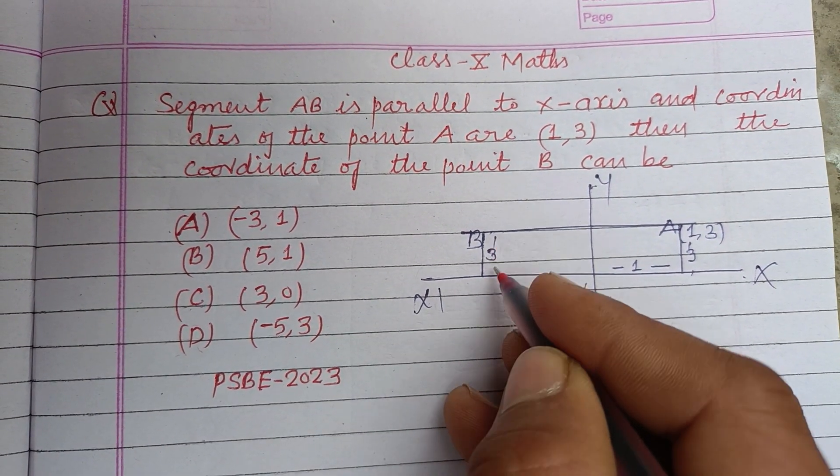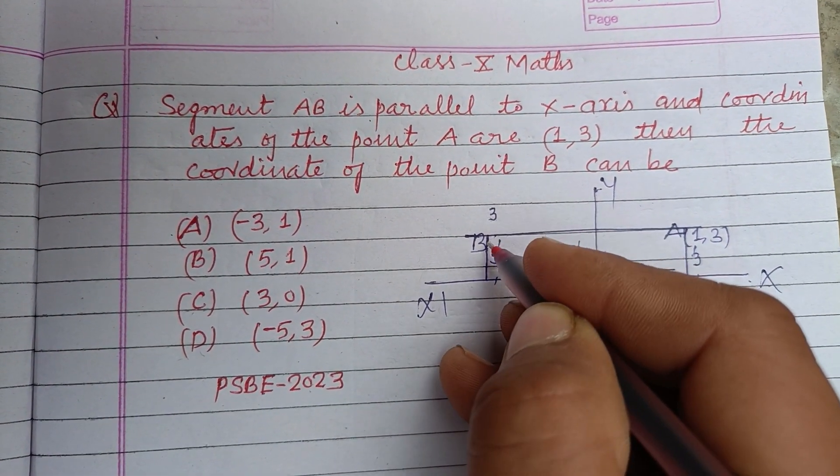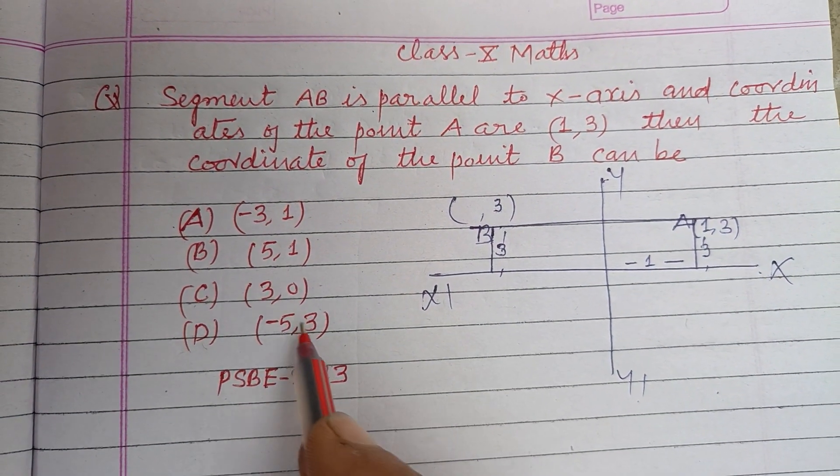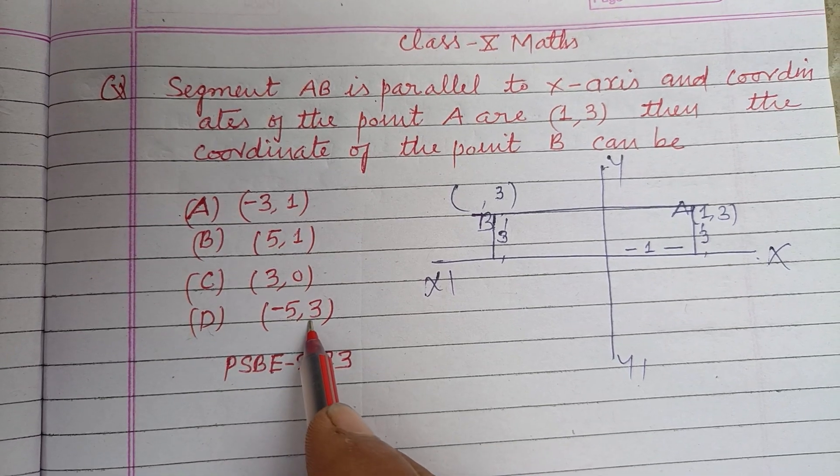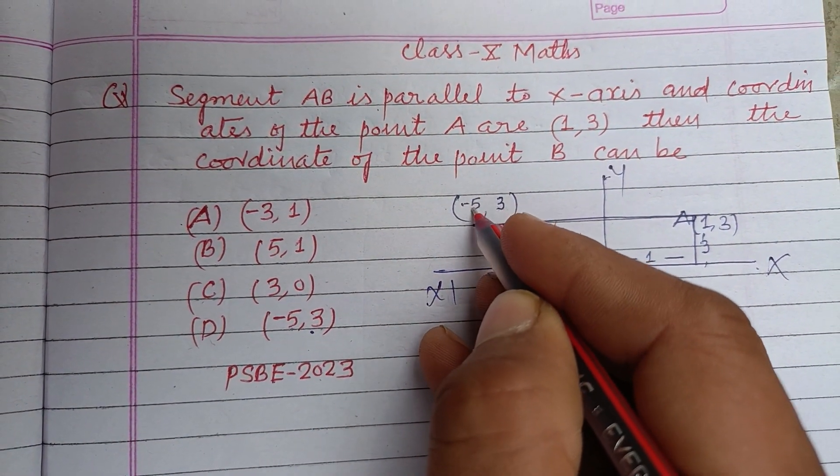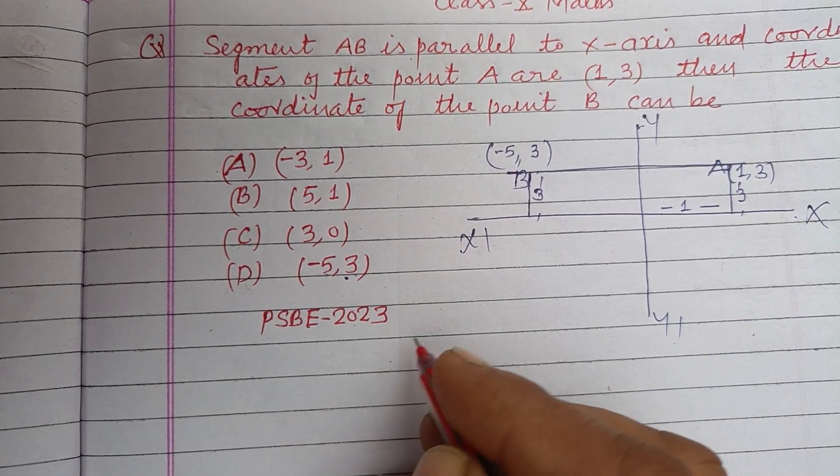So this is also 3, so the y-coordinate of this point is 3 and we need to find the x-coordinate. Only option D has y-coordinate 3, which is (-5, 3), so this is minus 5.